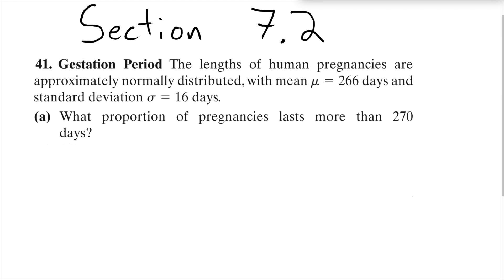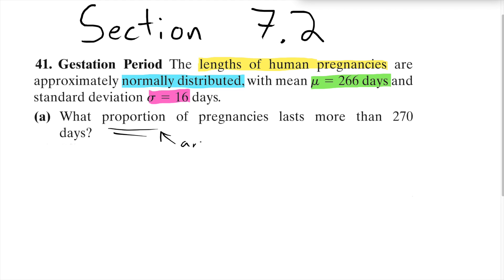This is number 41 from section 7.2 and the variable we're talking about here is the lengths of human pregnancies. We're told these are normally distributed and we've got the mean and the standard deviation. For a problem like this that asks for a proportion, that's asking for the area under a normal curve — not just any normal curve, but the one with this mean and this standard deviation.